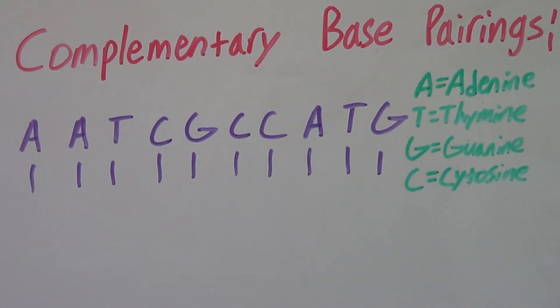For this, all you need to know are the letters. Now using this one side of DNA here, we want to figure out the other side. To do that, the only thing you need to know is that A and T pair together.